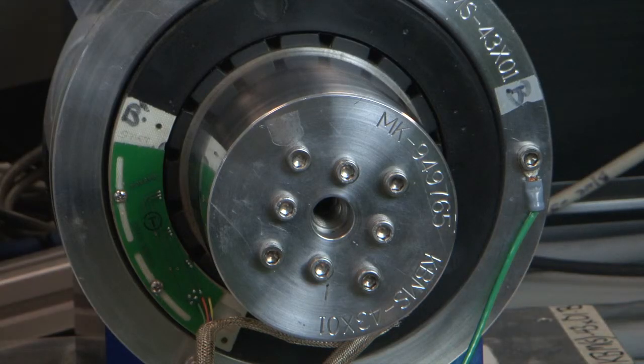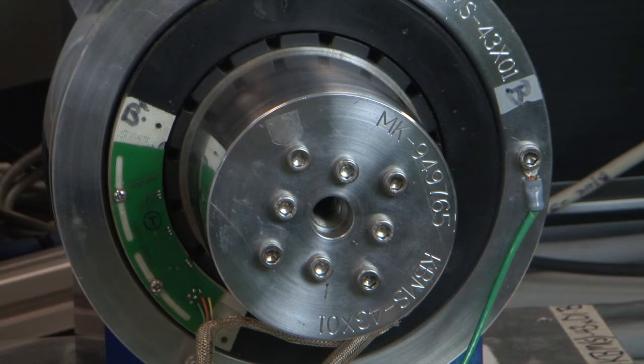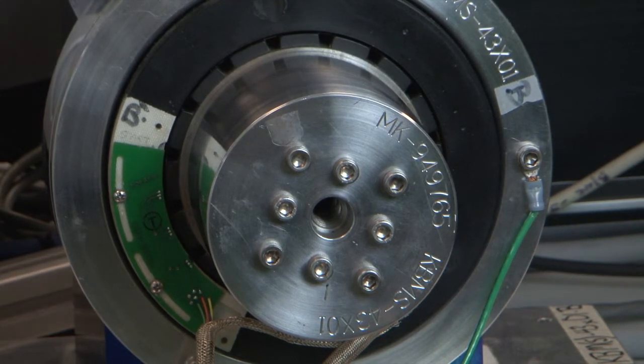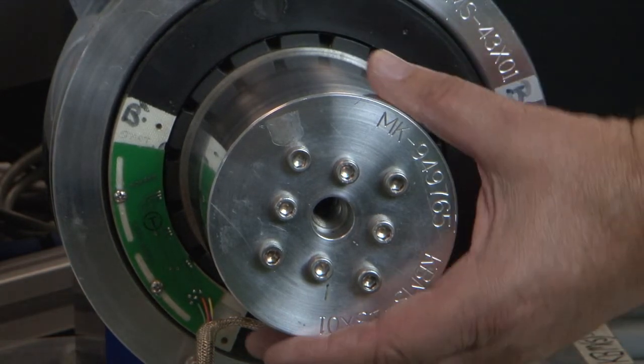One of the tell-tale signs that the feedback and motor are running in opposite directions from each other is the tendency for the motor to run away when disturbed.